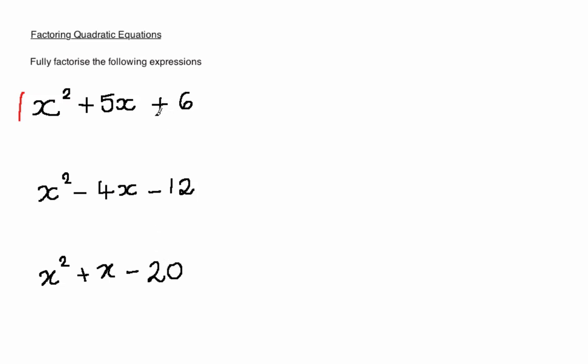The method I'm showing you now involves the two numbers that you can see here, the 6 and the 5. You've got to think of two numbers that multiply to give you plus 6 and add together to give you plus 5.